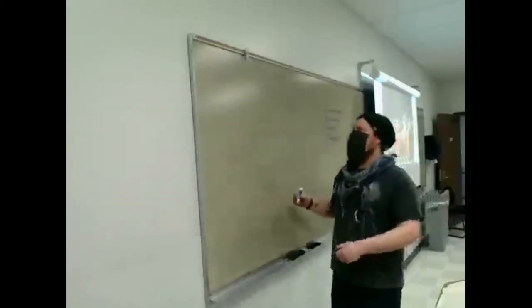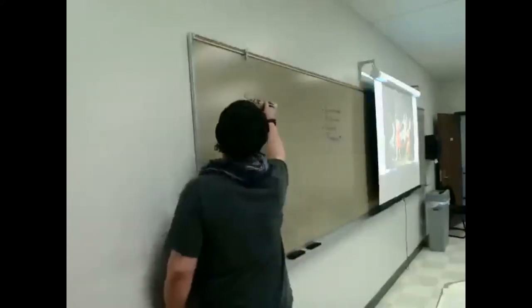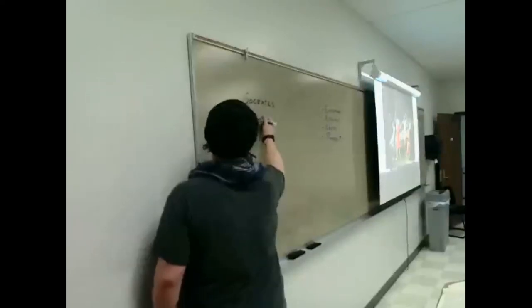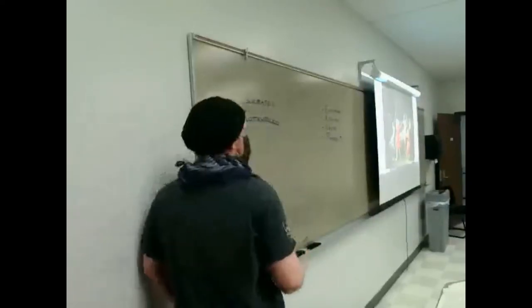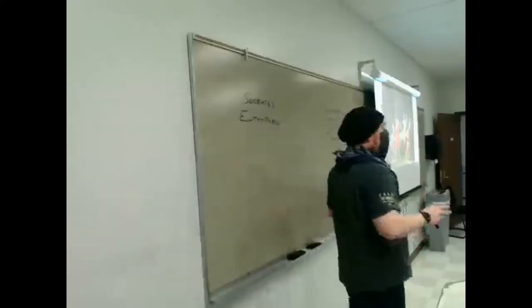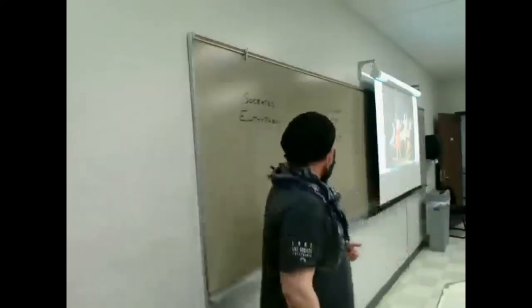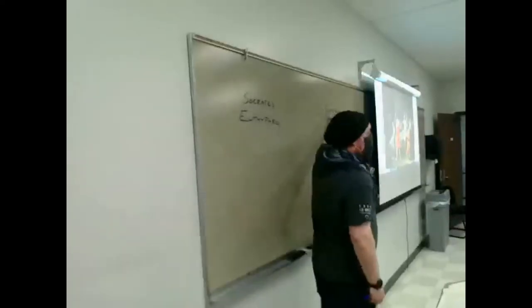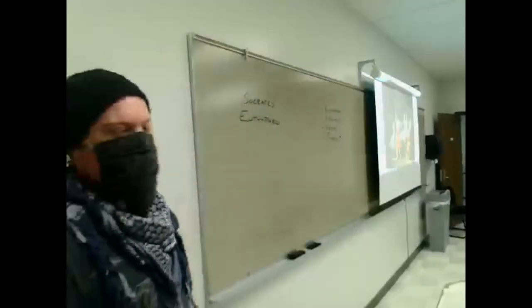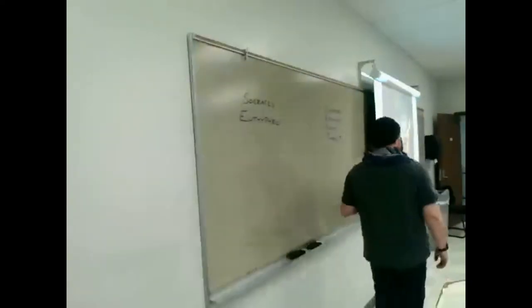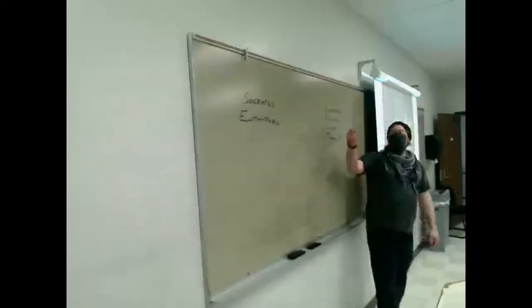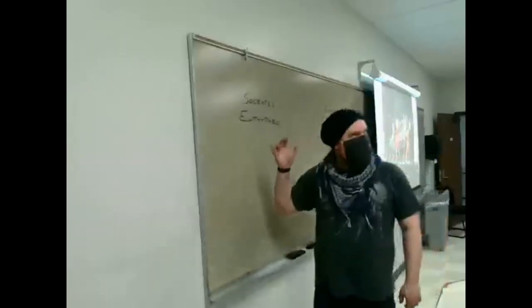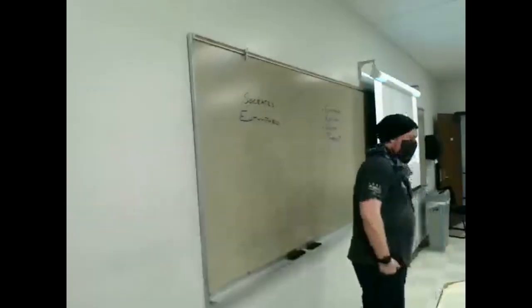While he's there, this other guy shows up, also waiting to go into the King Archon's court. His name is Euthyphro. When I say Euthyphro, there's two things: the name of the person, Euthyphro, and the name of the work by Plato, Euthyphro. When we get to weekly analyses, italicize the work, write the person's name normally.